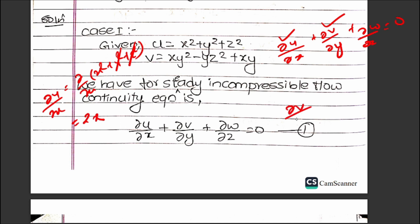∂v/∂y: I'll find the derivative of xy² - yz² + xy with respect to y. The first term gives x times 2y, minus the derivative of yz² which is 2yz, plus x. So this equals 2xy - 2yz + x.